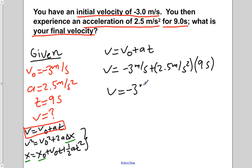Now if we carry out the multiplication, we'll get that it is 22.5 meters per second. And if we now add that to our initial velocity of negative 3 meters per second, we would find that our final velocity is 19.5 meters per second.